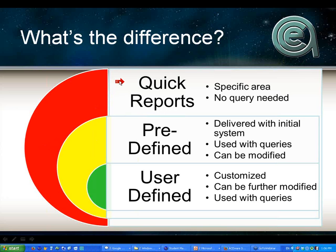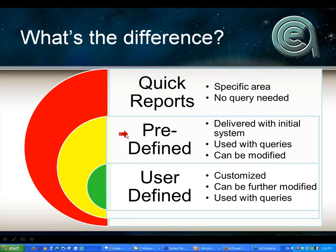Quick reports are the ones tied to the data screen — they don't have a query. You just click it and it gives you that course, that name, that registration on the report. Predefined reports are used with queries — these are the reports you use most often within an area. The predefined report for your program should be that report, whether it's rosters, course CEUs, or mailing labels, so that your users don't have to click additional and go find the report from the dropdown. User-defined reports can be customized, and all of these — quick, predefined, user-defined — can be used with queries.